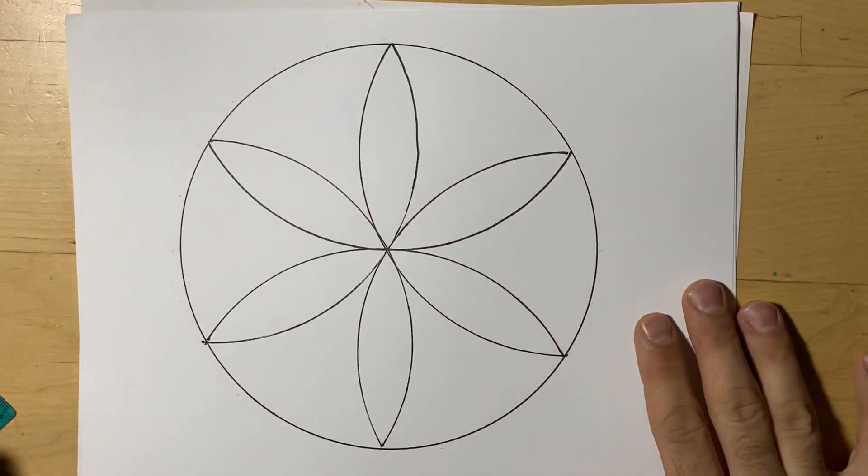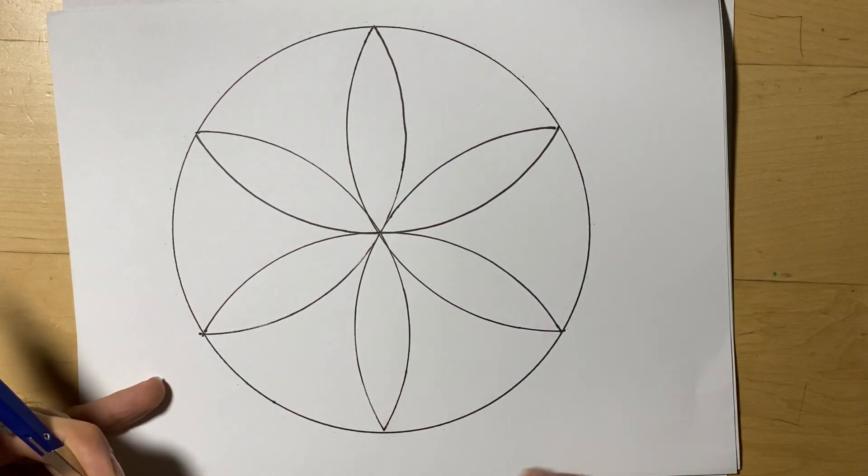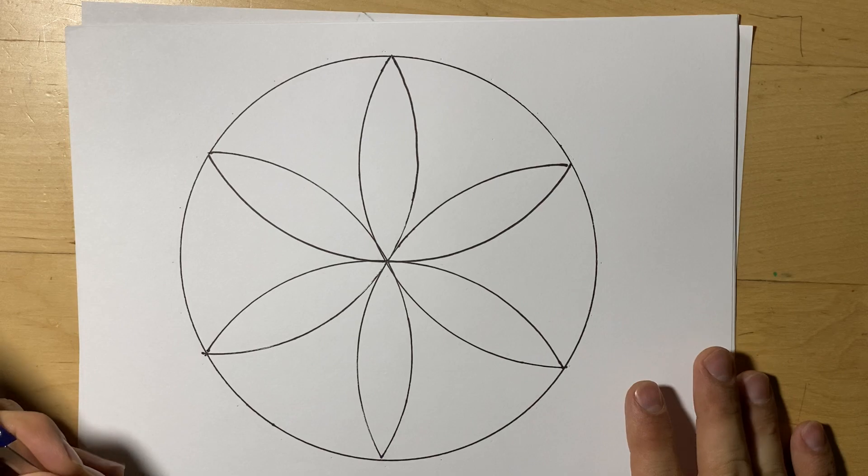This is called the seed of life pattern. You can make the star of David or you can make a hexagon around it. You can make multiple shapes with it.